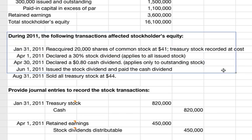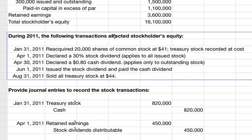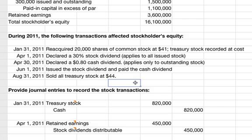During 2011, the following transactions affected stockholders' equity. On January 31st, they reacquired 20,000 shares of common stock at $41.00; this treasury stock was recorded at cost. On April 1st, 2011, they declared a 30% stock dividend, which applies to all issued stock. On June 1st, 2011, they issued the stock dividend and paid the cash dividend. And on August 31st, 2011, they sold all treasury stock at $44.00.